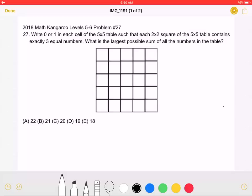This is the 2018 Math Kangaroo Levels 5-6, problem number 27. Write 0 or 1 in each cell of the 5x5 table such that each 2x2 square of the 5x5 table contains exactly 3 equal numbers.